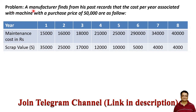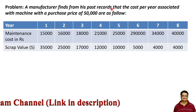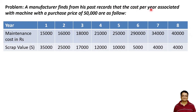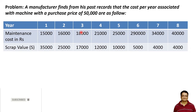The problem statement is given here. A manufacturer finds from his past records that the cost per year associated with a machine with a purchase price of 50,000 are as follows. We have been given the value of maintenance cost over eight years. The maintenance cost is increasing every year starting from the first year, whereas the scrap value or resale value of the machine is decreasing every year. We have to determine the optimum replacement policy — that is, at what year this machine should be replaced so that the average cost will be minimum.